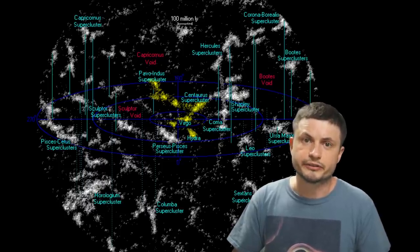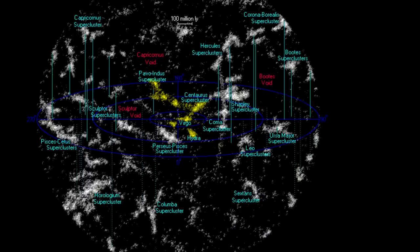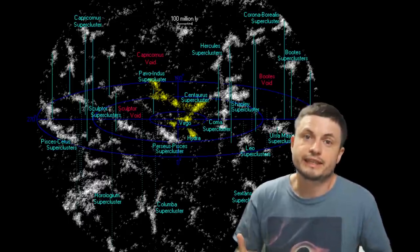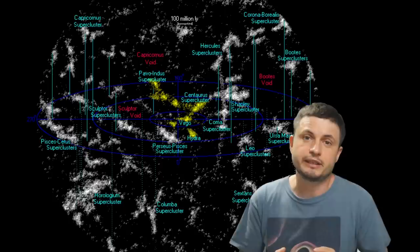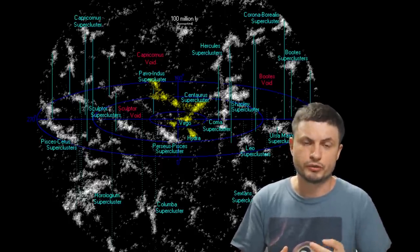Nevertheless, the Laniakea supercluster, which in this image you can see in yellow, forms a gravitationally connected superstructure. A structure that's essentially similar to a lot of other similar structures in the universe.